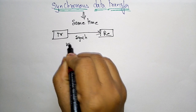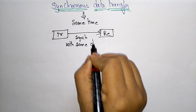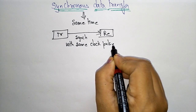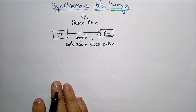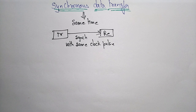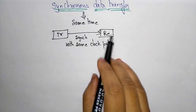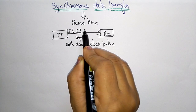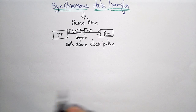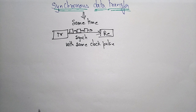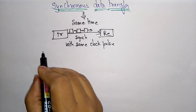In synchronous data transfer, from the transmitter device to the receiver device, the data will be transferred synchronously with the same clock pulse. Data is transmitted as a continuous stream — one stream after another, continuously. The main thing here is that timing signals are important; timing signals are generated by the internal clock pulse.